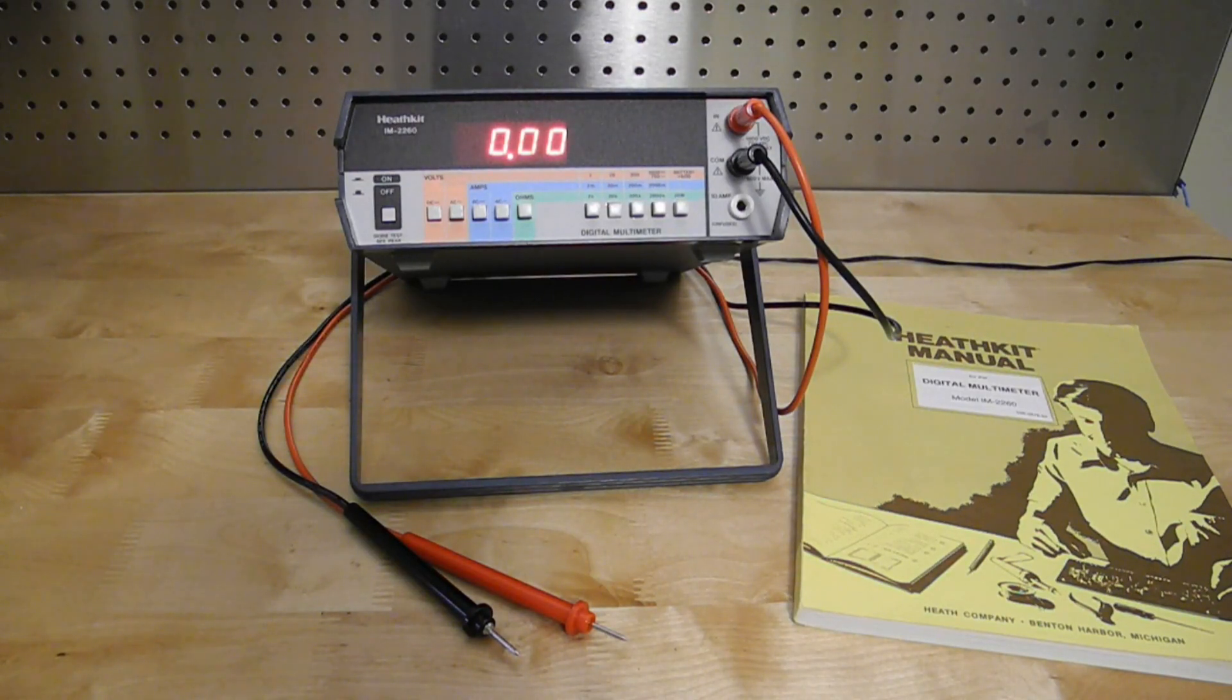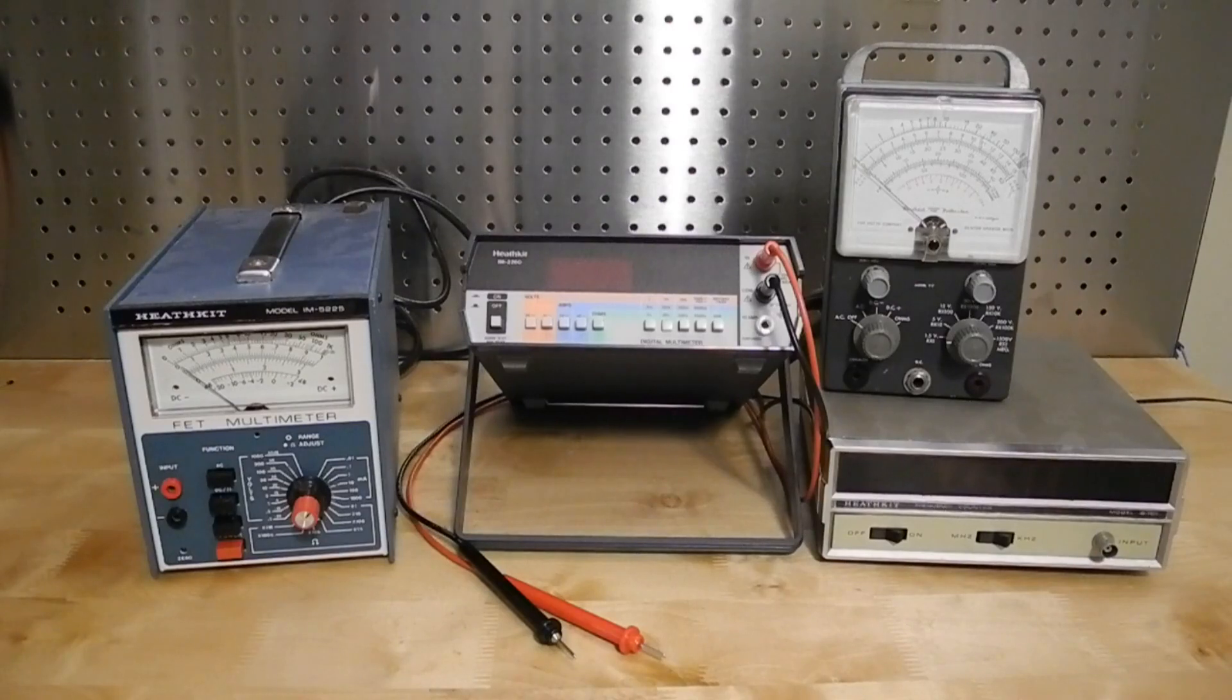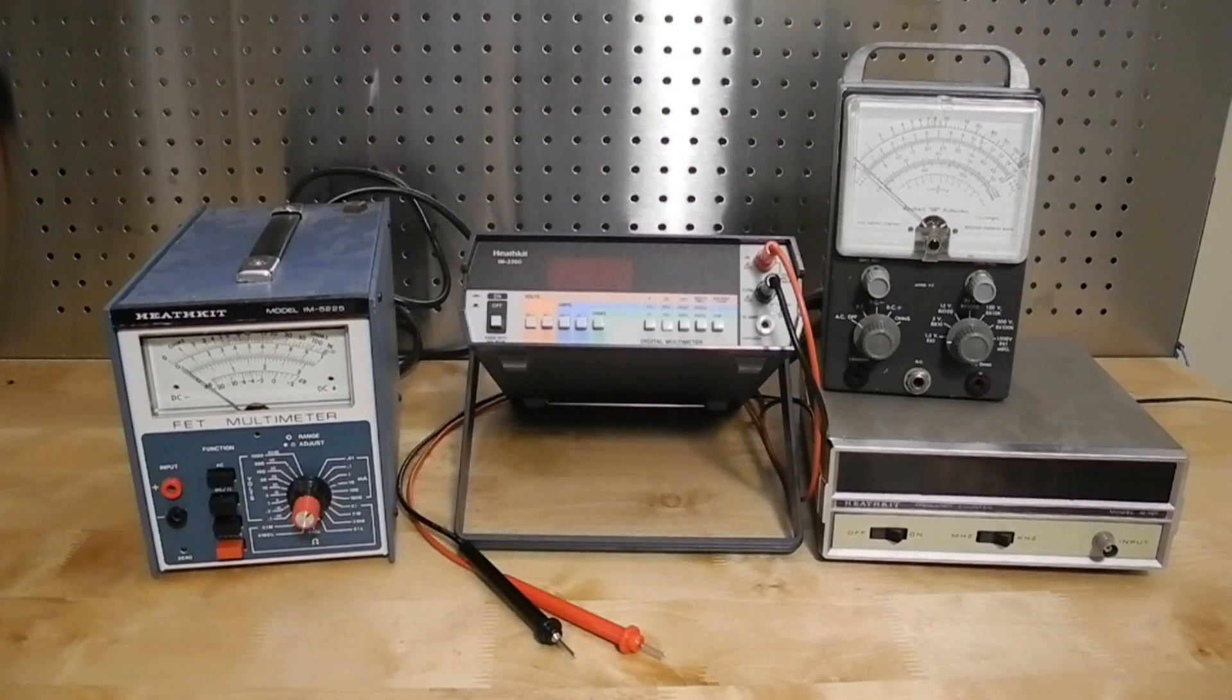In this video, we'll look at the Heathkit IM2260 Digital Multimeter. A large portion of Heathkit's business was selling test equipment in kit form. The first products offered in the 1940s were an oscilloscope and a vacuum tube voltmeter.